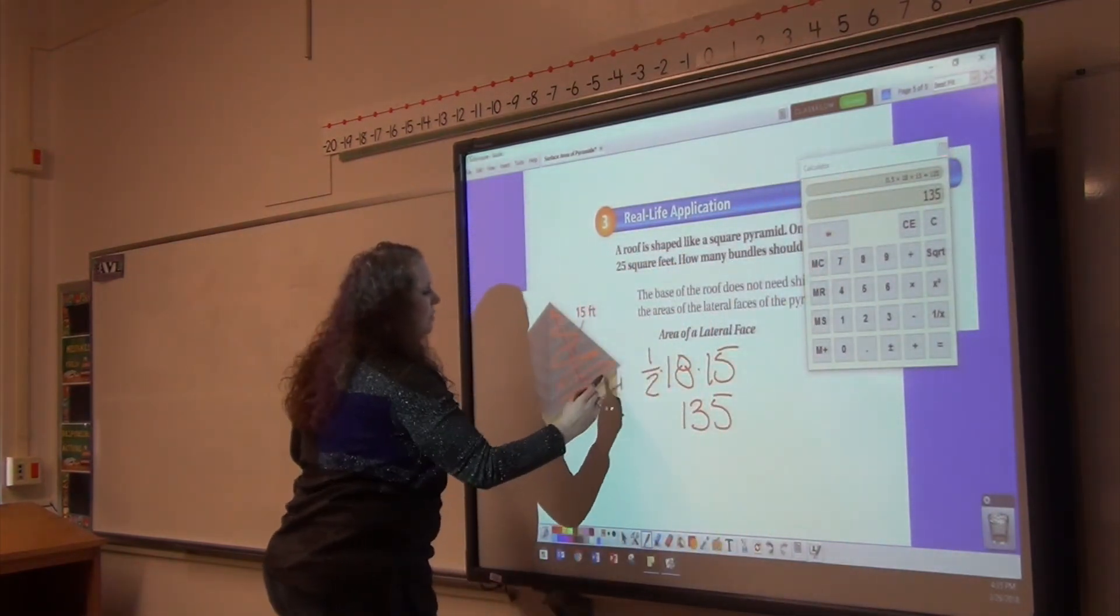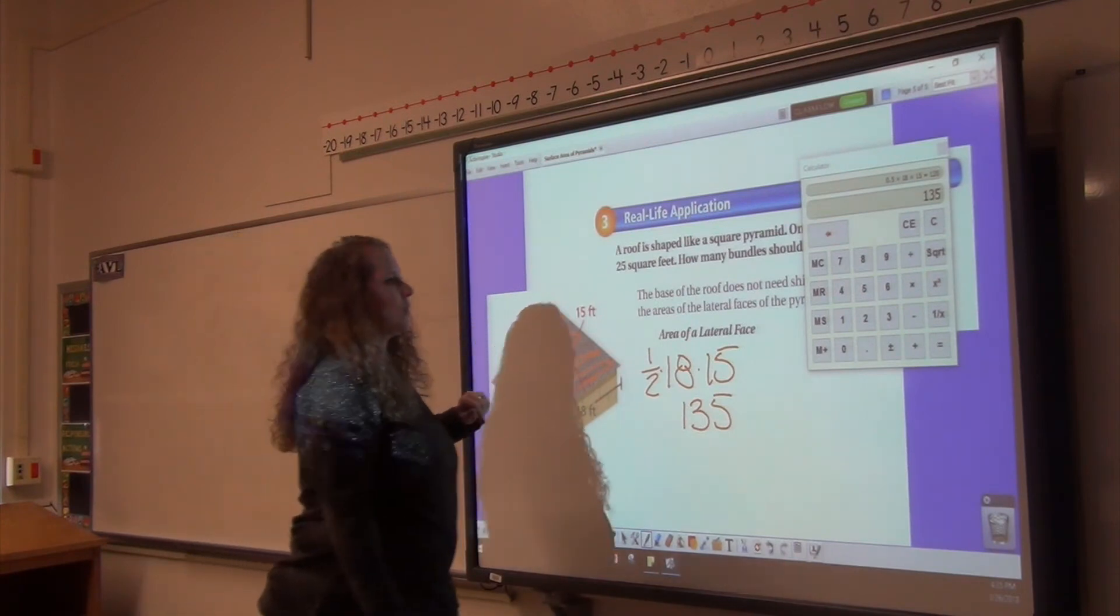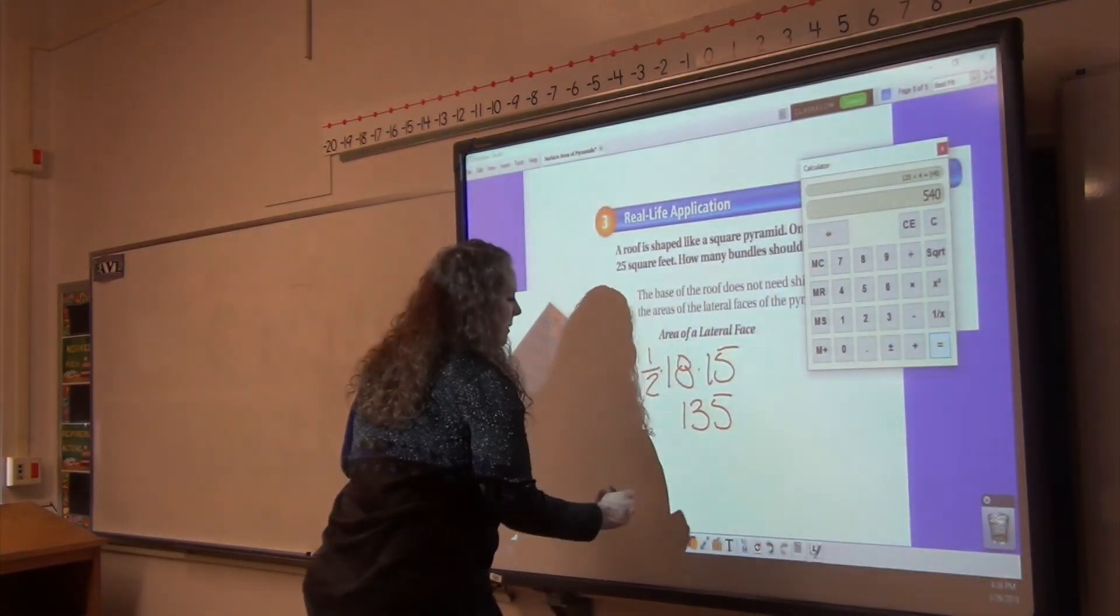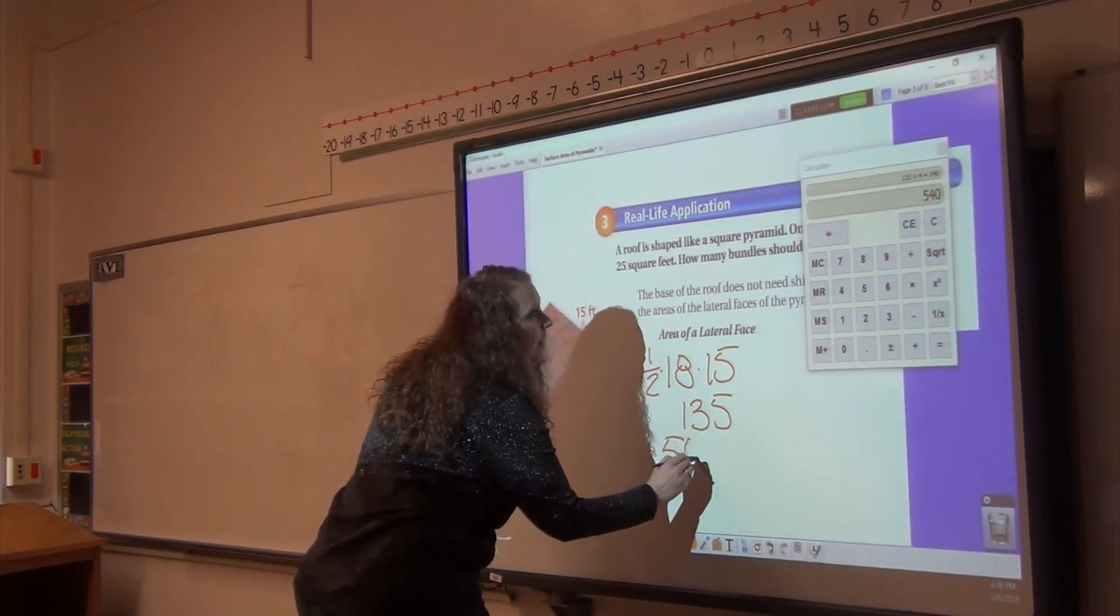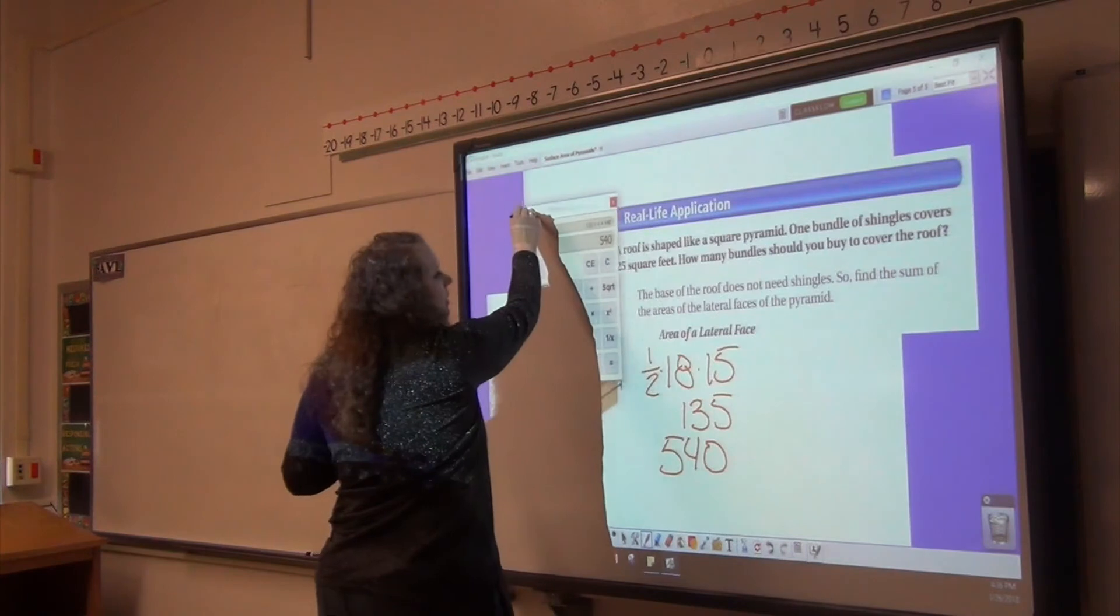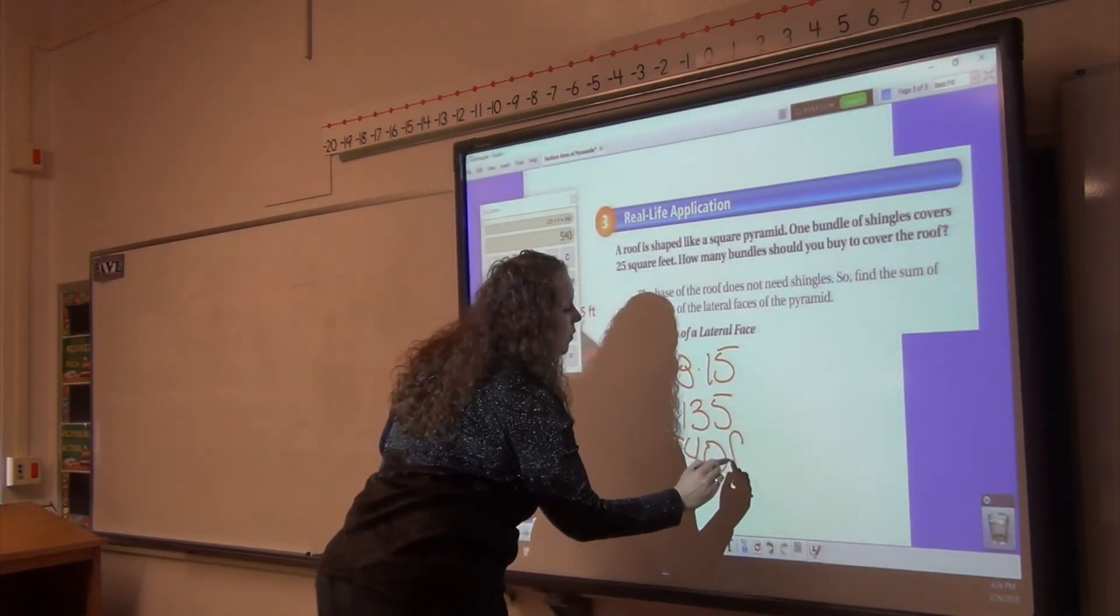0.5 times 18 times 15 equals 135, which is one side. I know this one side. But I have four sides, so I need to multiply that by four. So my surface area is 540 feet squared.